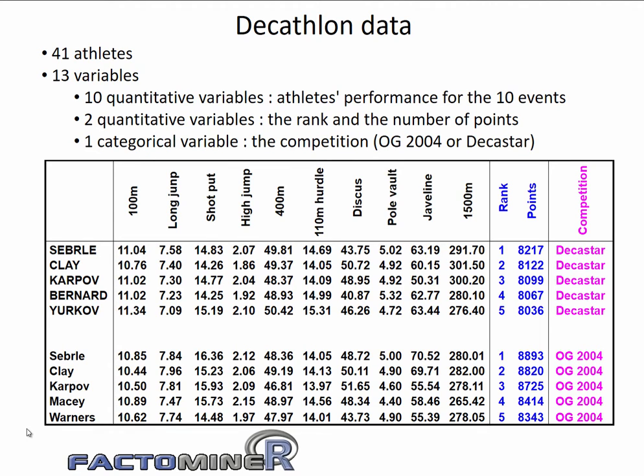The next two variables are quantitative and treated as supplementary ones. They are the rank of each athlete after the Decathlon is over and their total number of points. The 13th and final variable is qualitative, stating whether a particular athlete participated in the Decastar competition or the Olympic Games. We are going to do the clustering step using only the performance data, that is the first 10 variables. If we want any more details about this dataset, feel free to go back and have a look at the PCA video.